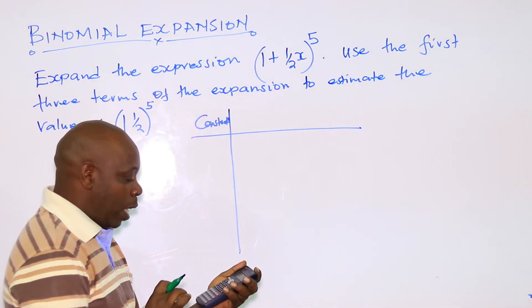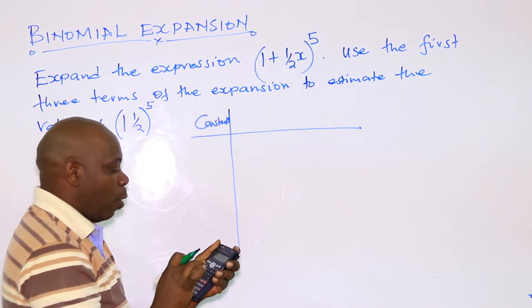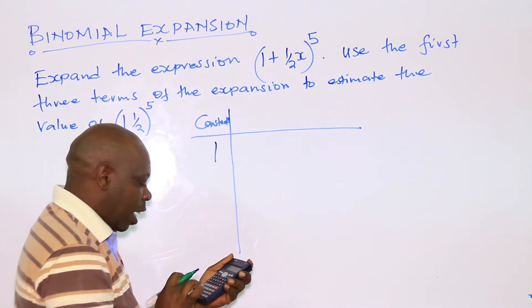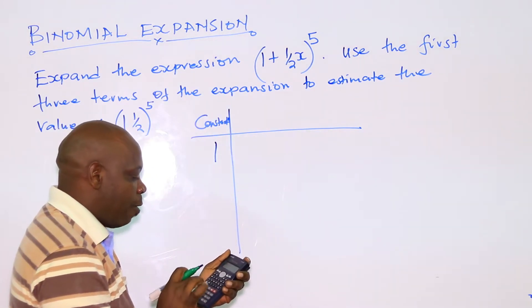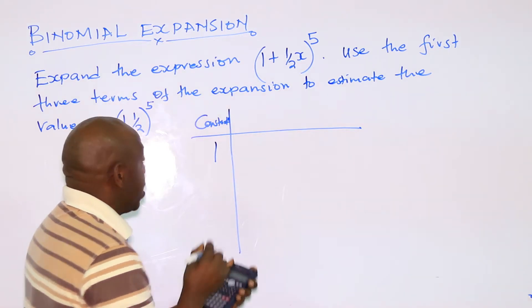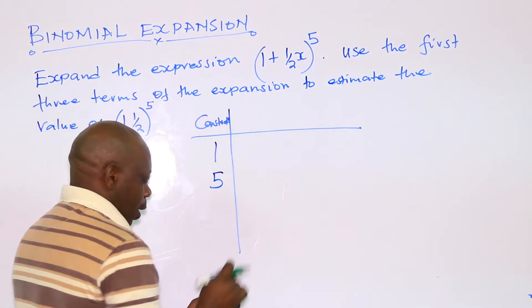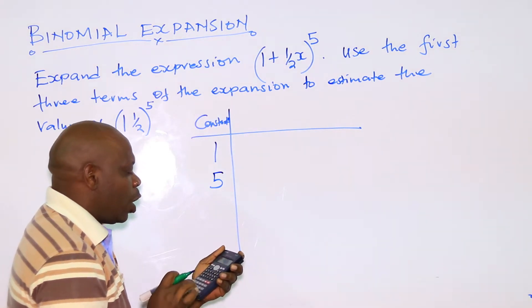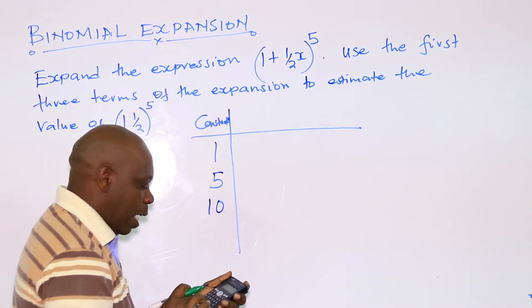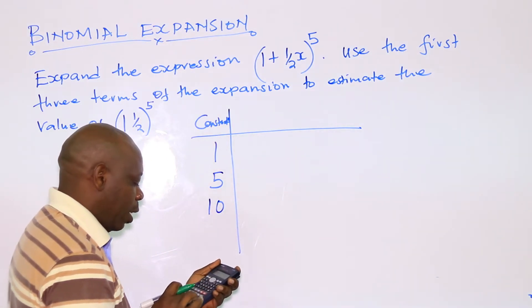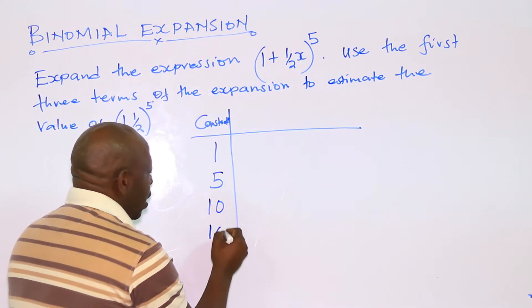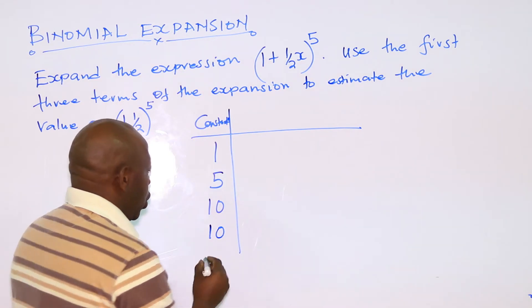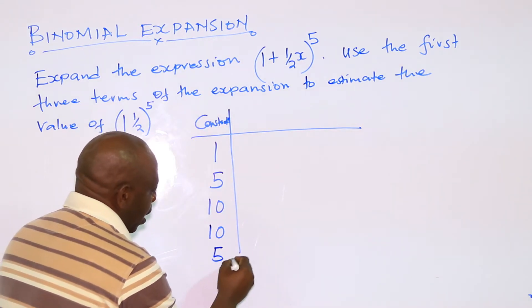The power is 5, so: 5C0 gives 1; 5C1 gives 5; 5C2 gives 10; 5C3 gives 10; 5C4 gives 5; and eventually 1.